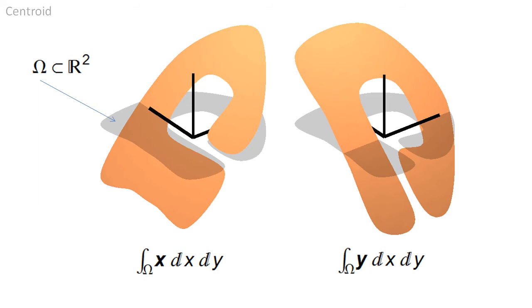The centroid corresponds to the two moments of degree 1, which are then divided by the area value. The coordinate functions, x and y, are shown here over the domain Ω. The moments of degree 1 are the two integrals.